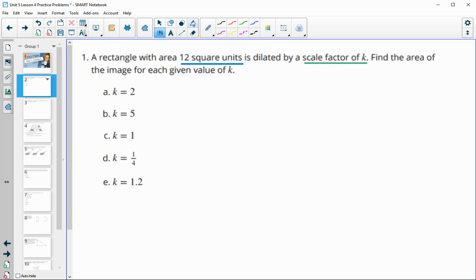So remember when we are doing area, that shapes have two dimensions that are being scaled with this scale factor. So when we go to actually find our new area, we have to remember that it's going to be our original area times our scale factor squared since we're going to dilate two different dimensions by K.